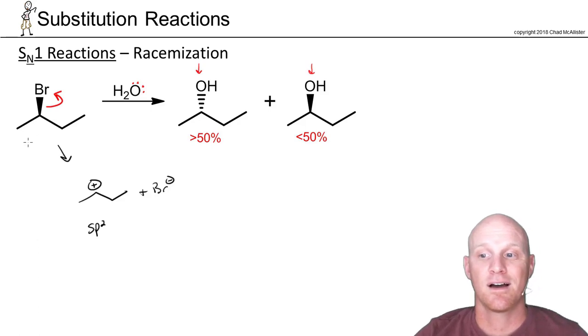And so in this case we say that racemization takes place. When an SN1 reaction happens at a chiral center you'll form both versions of that chiral center, both R and S. But it turns out it won't be perfect 50-50.